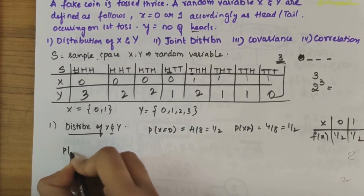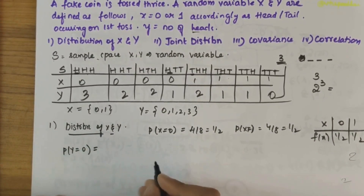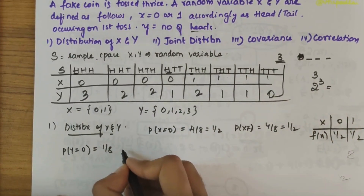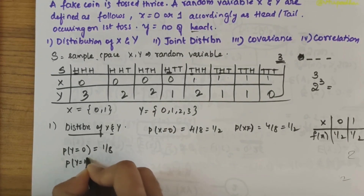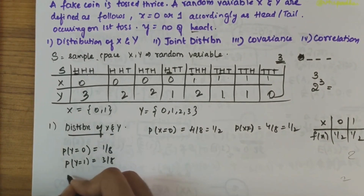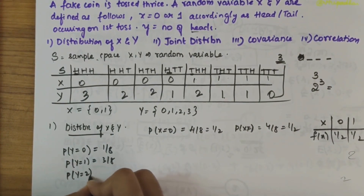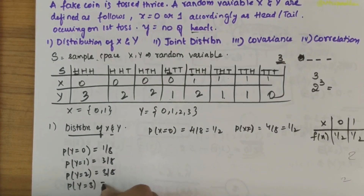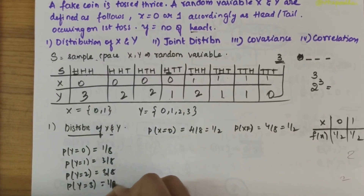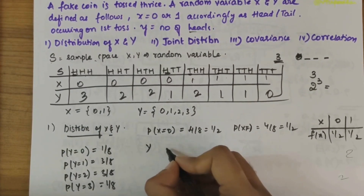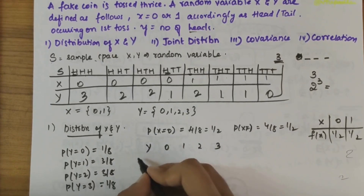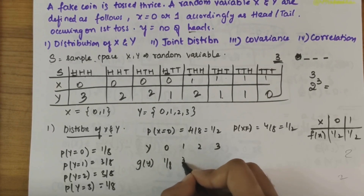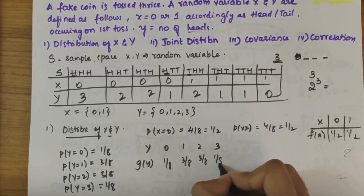Now writing the distribution for Y. When Y equals 0, only 1 possibility exists, so g(Y=0) equals 1/8. When Y equals 1, there are 3 possibilities, so g(Y=1) equals 3/8. When Y equals 2, there are 3 possibilities, so g(Y=2) equals 3/8. When Y equals 3, only 1 possibility exists, so g(Y=3) equals 1/8.